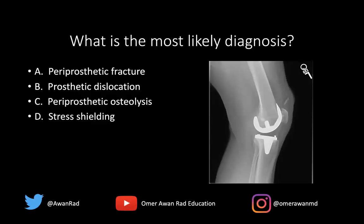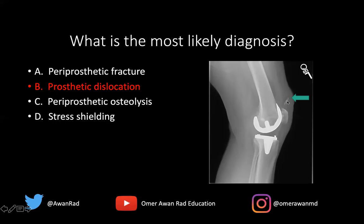The answer here, of course, is prosthetic dislocation. A total knee arthroplasty means that all three compartments of the knee have been replaced — the medial femoral tibial compartment, the lateral femoral tibial compartment, and the patellofemoral compartment. What we have here is the patellar button or patellar liner that's been displaced superiorly with respect to the patella. It should be seated on the articular surface of the patella, so this displacement represents a case of prosthetic dislocation.